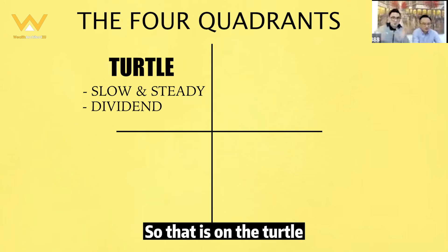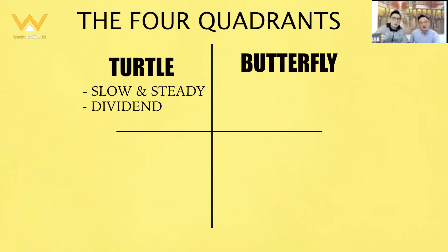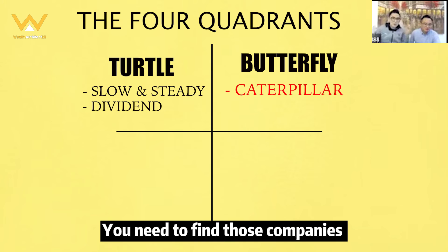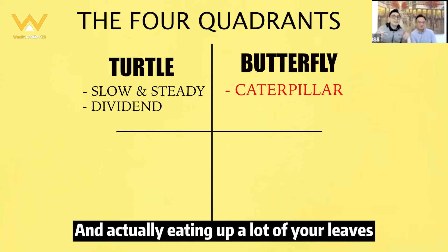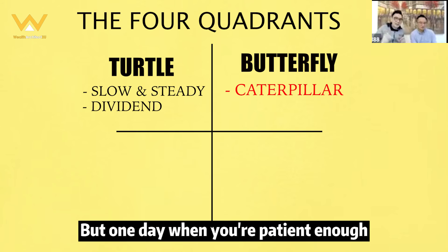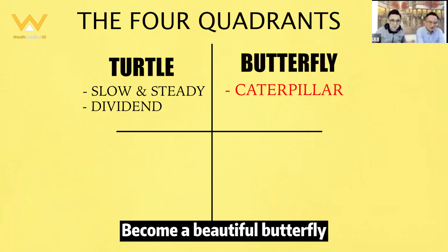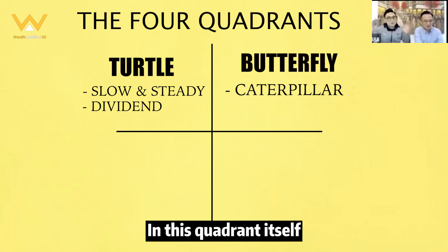The second quadrant is the 'Butterfly.' The characteristic of the butterfly — before turning into a butterfly, it is a caterpillar. In this quadrant, you need to find companies which are currently ugly, like a caterpillar. They are eating up a lot of your resources, but if you are patient enough, one day they will reward you and become a beautiful butterfly.